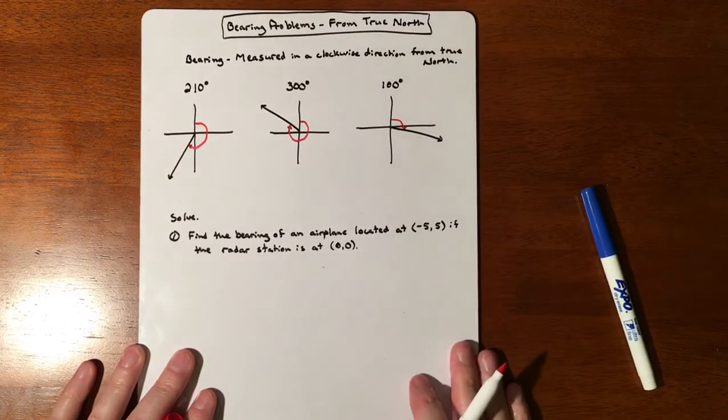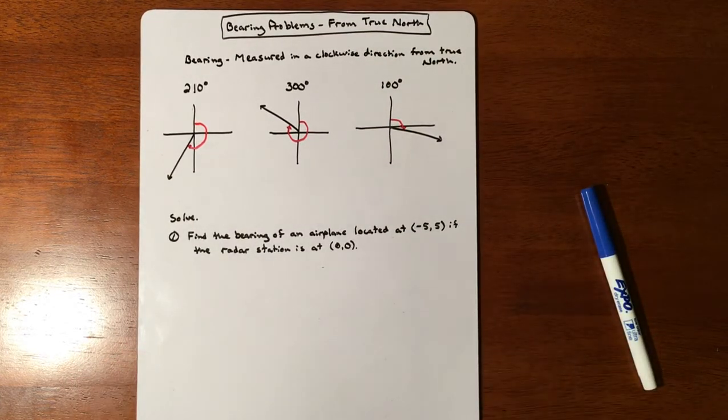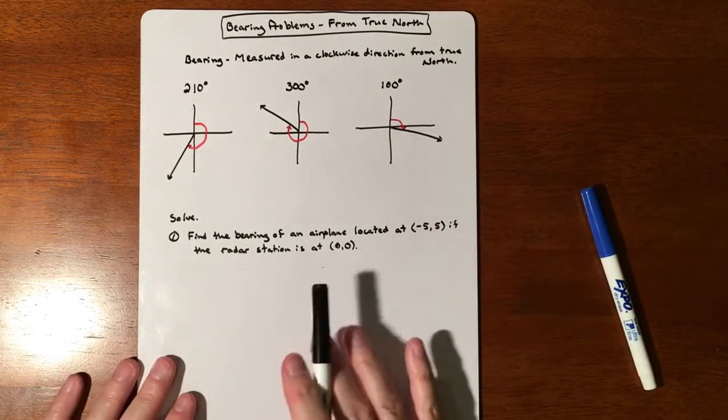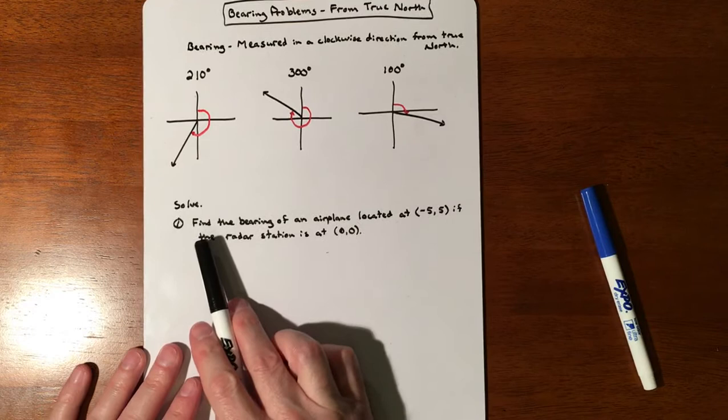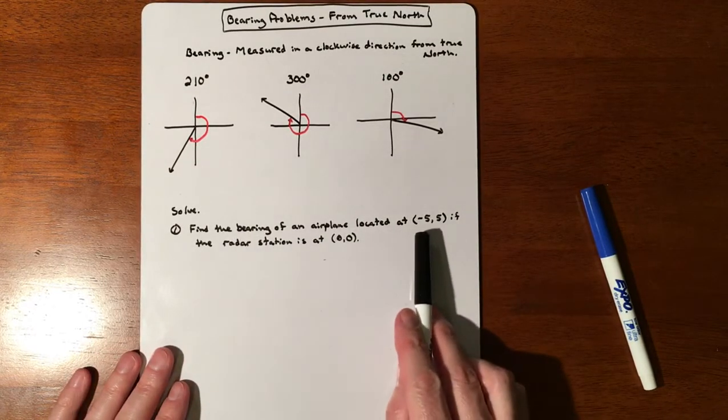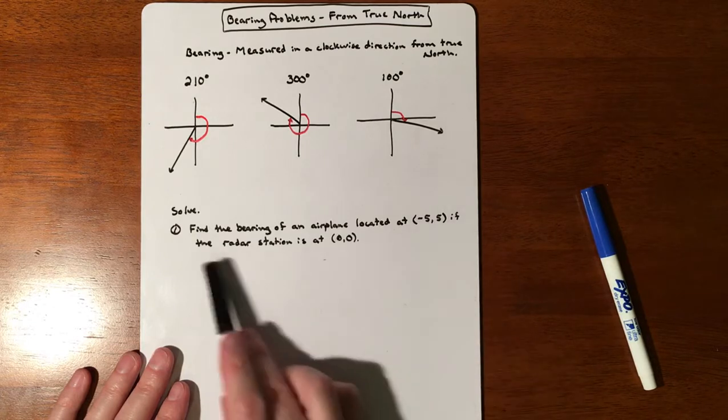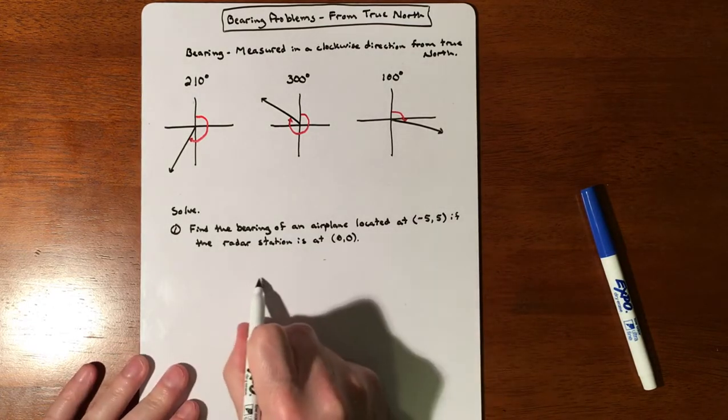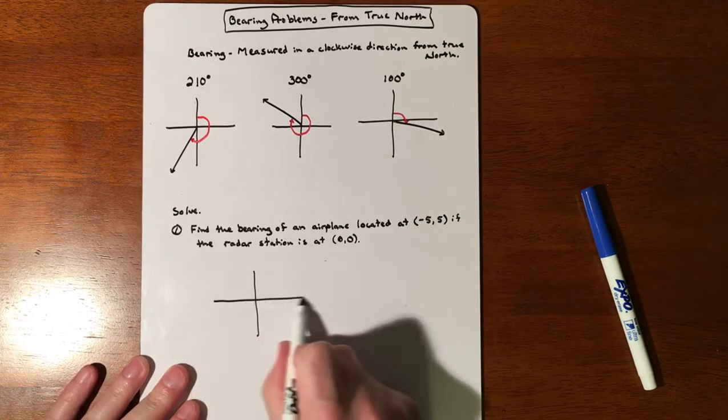Similar but a little bit different - we're not starting on the x-axis, we're starting true north and going in a clockwise fashion. So let's do a word problem associated with that. We're trying to find the bearing of an airplane located at negative 5, 5 if the radar station is at zero zero.